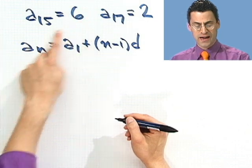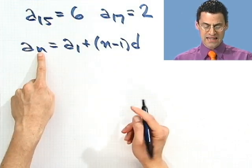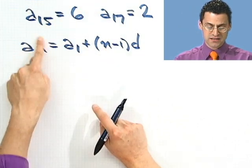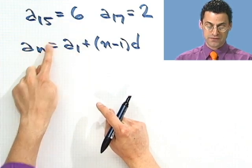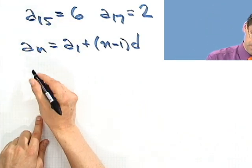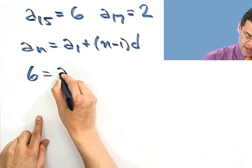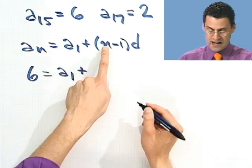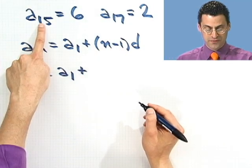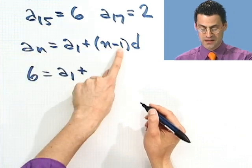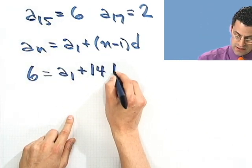If I plug this fact in, what do I know? When n equals 15, I know this number must be 6. a15 is 6. So I'd see 6 equals a1 plus, and then what's n minus 1? Well, if n is 15, this would be 15 minus 1, which is 14d.